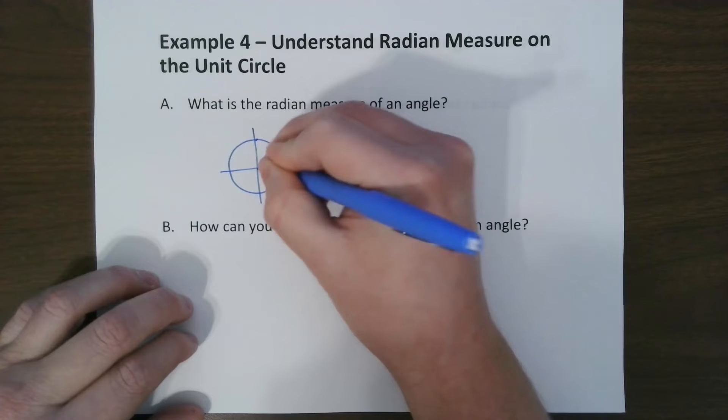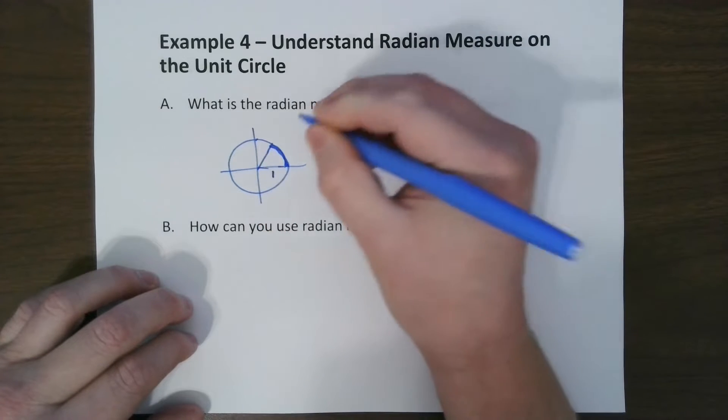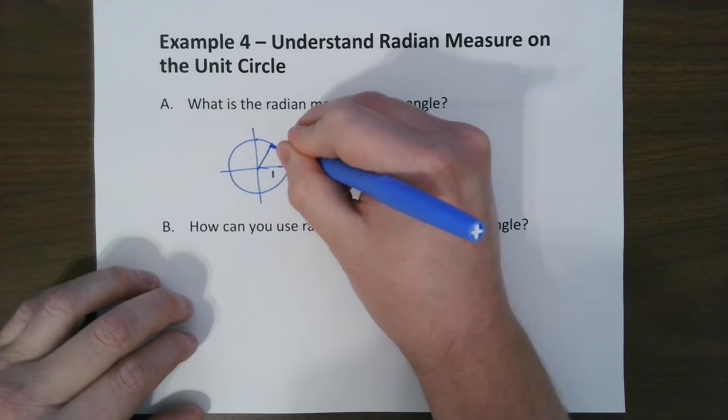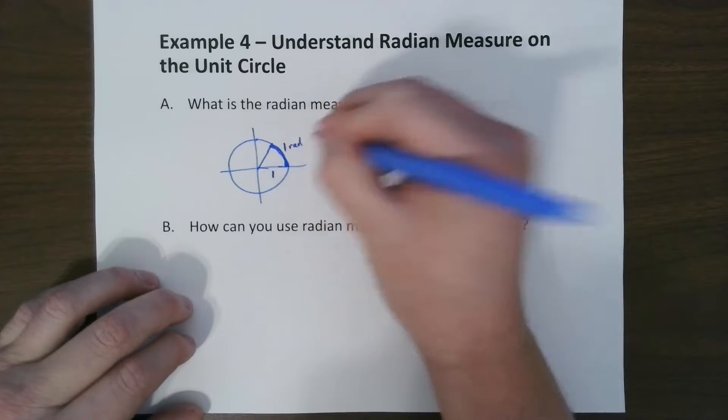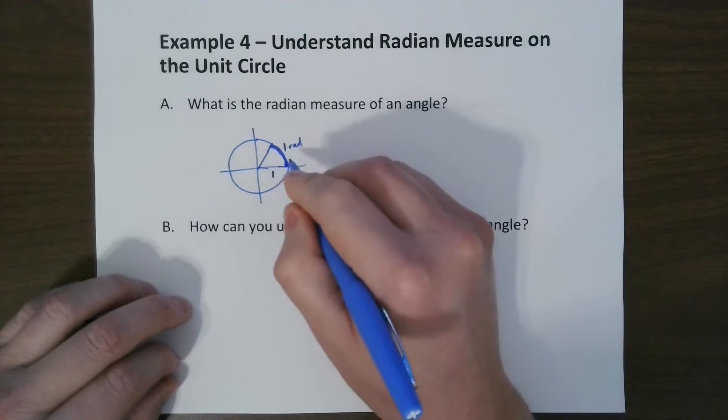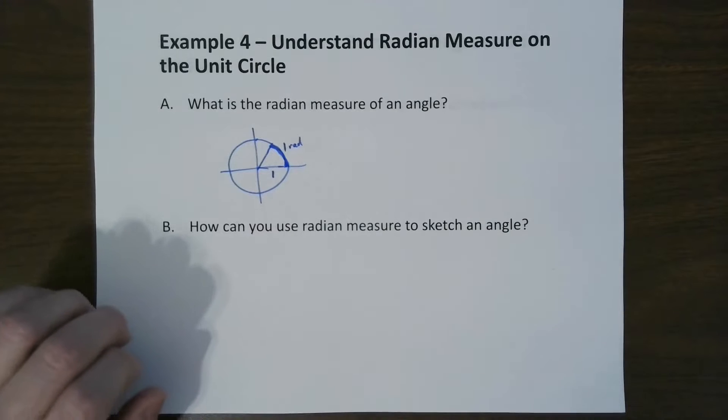So what a radian is, this distance right here, since we know the radius of the unit circle is 1, the arc length here, when that is run, that is called a radian. Because this distance is the same as the radius, so it's got a radian.